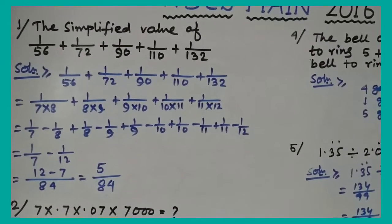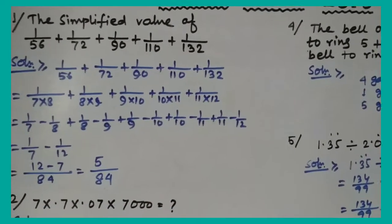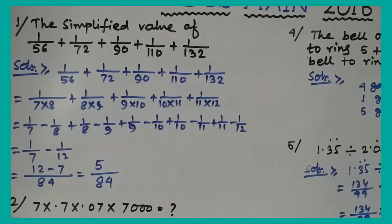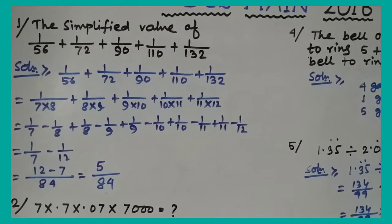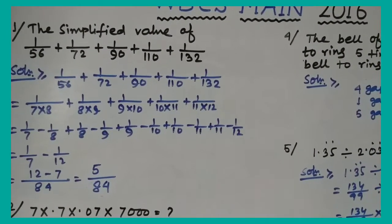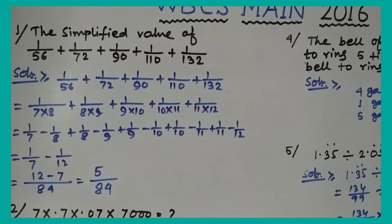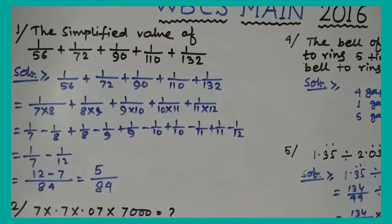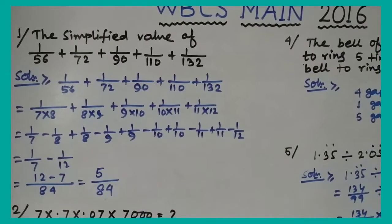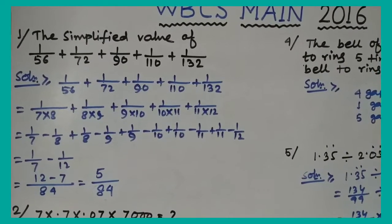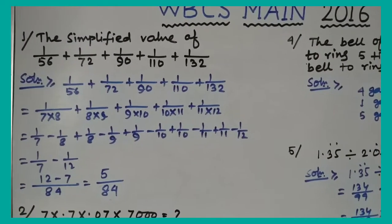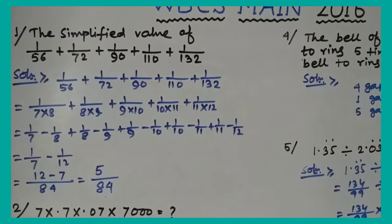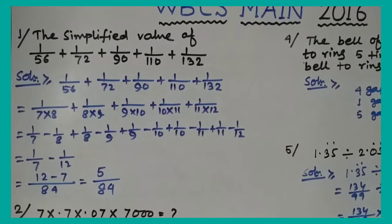56 is 7×8. 72 is 8×9. 90 is 9×10. 110 is 10×11. And 132 is 11×12. So the expression becomes 1/(7×8) + 1/(8×9) + 1/(9×10) + 1/(10×11) + 1/(11×12).